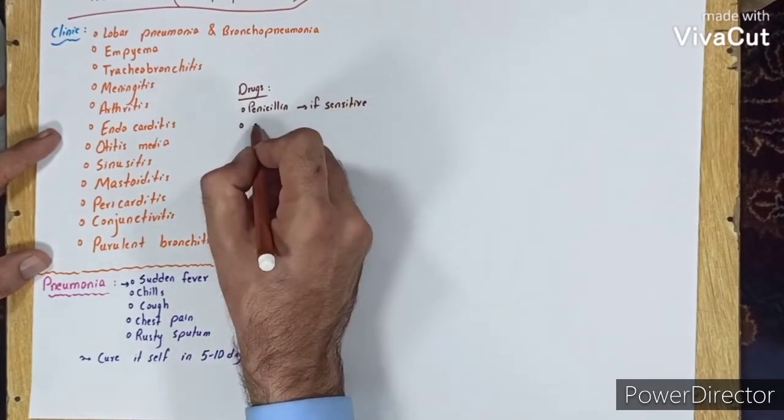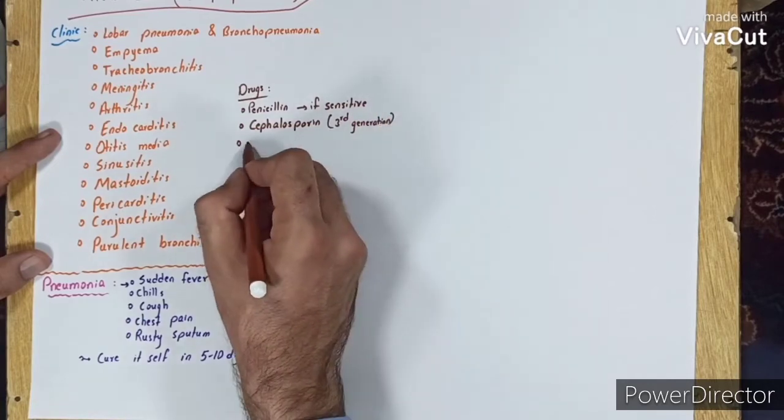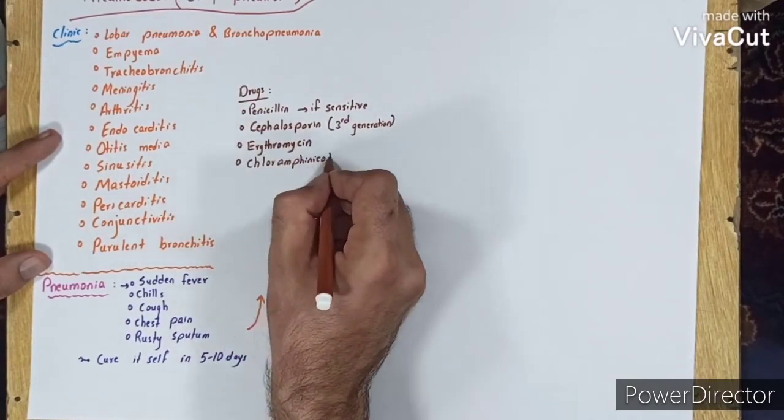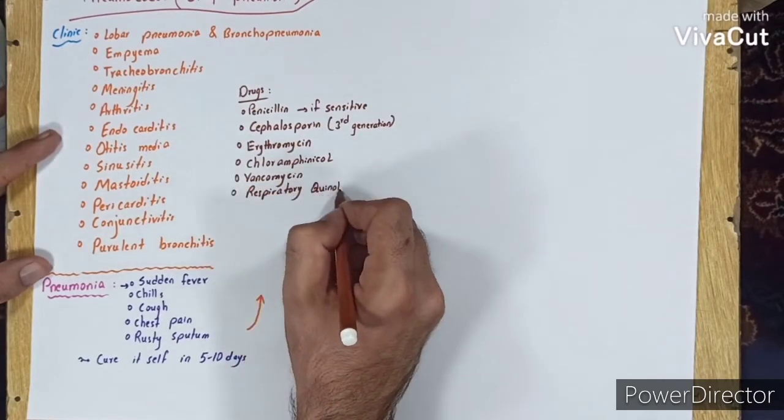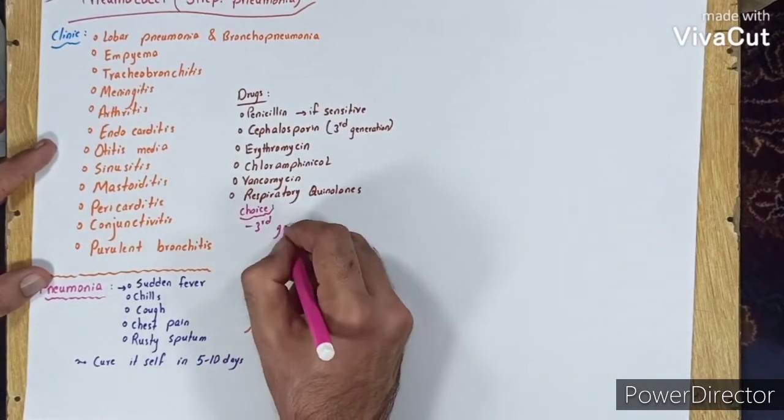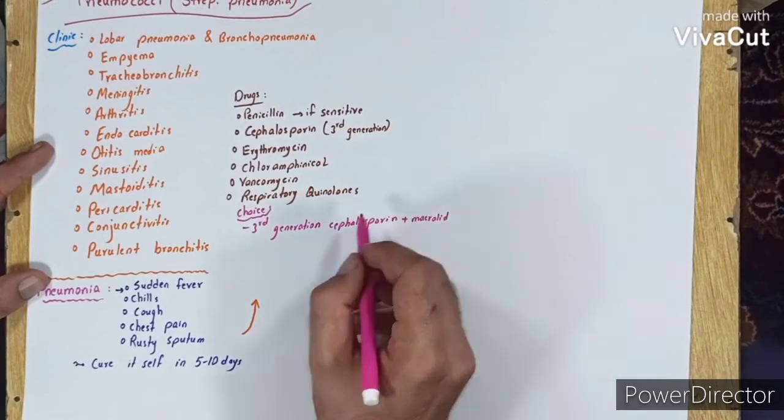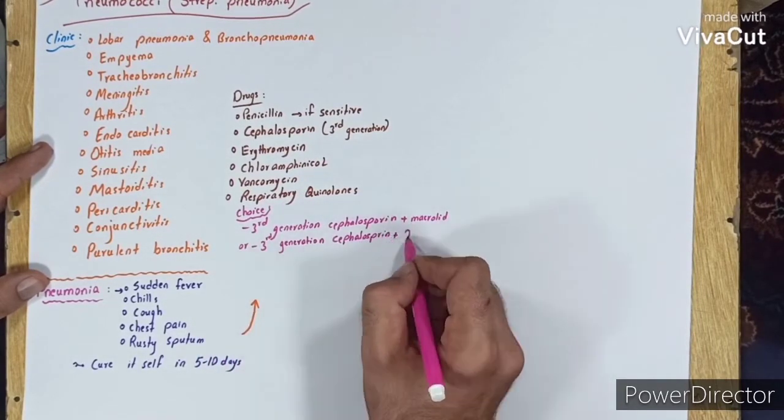Penicillin (if sensitive), third generation cephalosporins, erythromycin, chloramphenicol, vancomycin, and respiratory quinolones. Drug of choice is third generation cephalosporin plus macrolides or third generation cephalosporin plus quinolone.